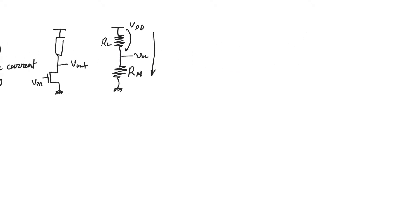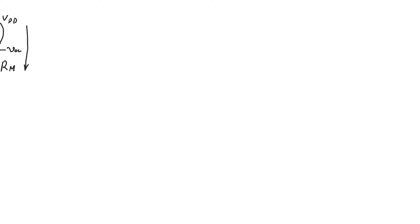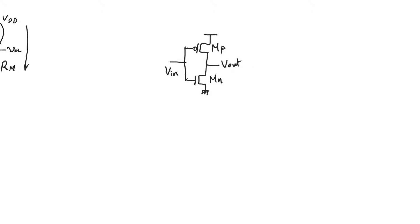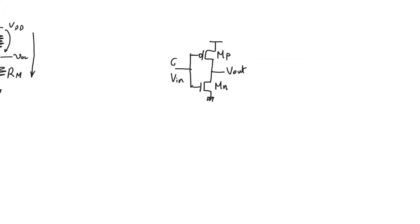Let's see how the CMOS inverter functions and whether it addresses these four problems. The CMOS inverter consists of a PMOS transistor and an NMOS transistor. It looks at first glance like a pseudo-NMOS inverter, but the difference is that we do not have a driver and a load. Both the NMOS and PMOS accept the logic input V_input, so both transistors are drivers. They share the gate input.